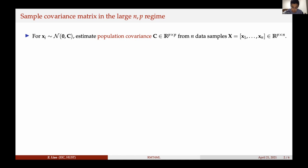This is essentially the best thing we can do if n is much larger than the dimension p. However, if we are working in the high-dimensional region where n is approximately of the same order as p, then our conventional wisdom and the maximum likelihood estimator breaks down. A trivial example: when the population covariance C equals identity and n is smaller than dimension p, the sample covariance estimator C-hat is a p by p matrix and it's a sum of n rank-one matrices.